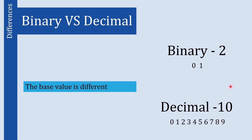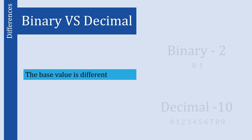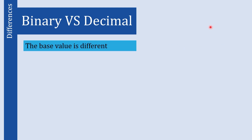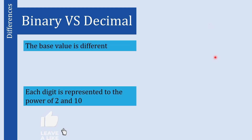This base is also called the radix. The radix of binary is 2 and the radix of decimal is 10. If you want to know more about radix and different number systems, you can refer to my other video where I have explained all those things in detail.